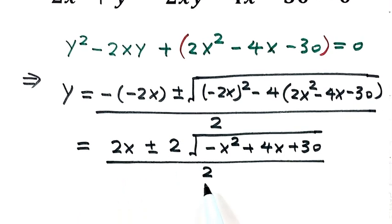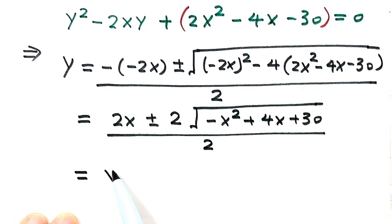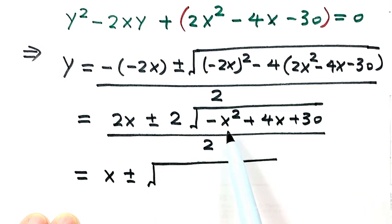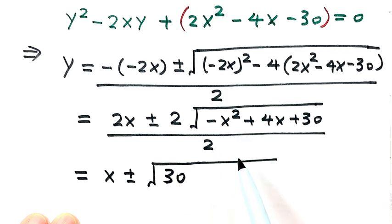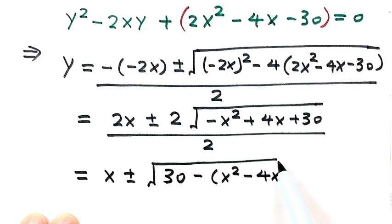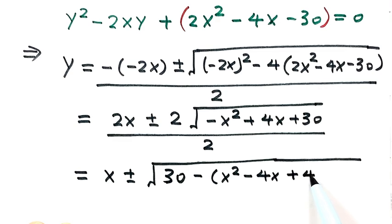Continue to simplify by canceling out the common factor, then y equals x plus or minus the square root. For the part under the square root, we reorganize it. Write 30, then combine the other terms by taking out the negative sign: minus(x² − 4x). Next we want to form a complete square including these two terms, so we add 4.